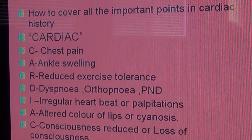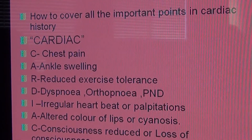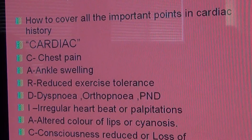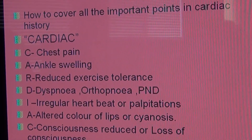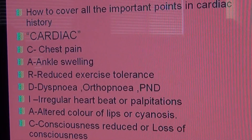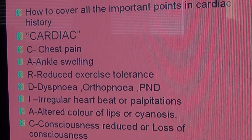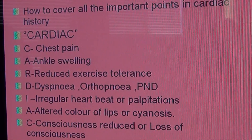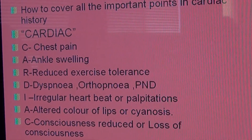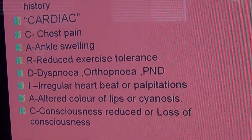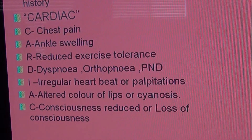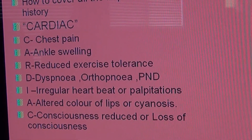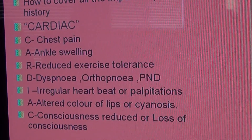R is reduced exercise tolerance, where you ask the patient how many blocks he is able to walk now and how many blocks he was able to walk in the past, or how many stairs he can climb and how many stairs he used to climb in the past, which tells whether his exercise tolerance is reduced or not.